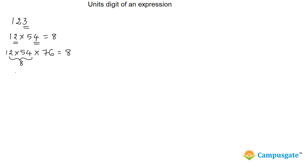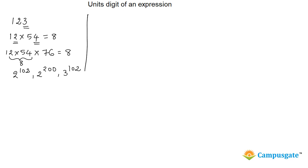But sometimes we will get numbers like 2 power 102, 2 power 200, and 3 power 102. In this case, how do you find the unit's digit? First I will discuss the shortcut technique on how to find the unit's digit of expressions like this, and then we will discuss the concept behind how this shortcut actually works.